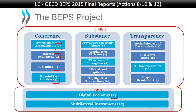Action 5 dealt with harmful tax practices. Countries need to stop competing with each other on taxes in a way where one country tries to harm the interest of another. So if you give tax rulings which affect the taxpayers of another country, you should exchange those rulings with them, become more transparent, and don't break the coherence of the international tax system — fix it.